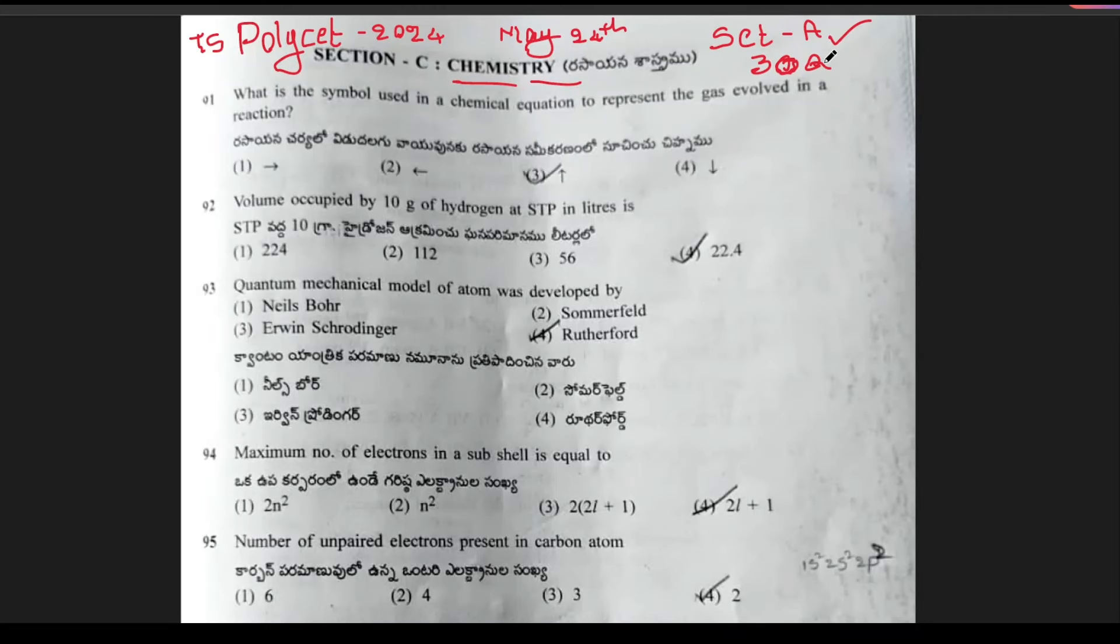The first question: what is the symbol used in a chemical equation to represent the gas involved in a reaction? Option 3 is the right answer. Next question: volume occupied by 10 grams of hydrogen at STP in liters? Options are 224, 112, 56, and 22.4. Option 112 is the right answer. Next question: quantum mechanical model of atom was developed by? That is none other than Erwin Schrödinger.